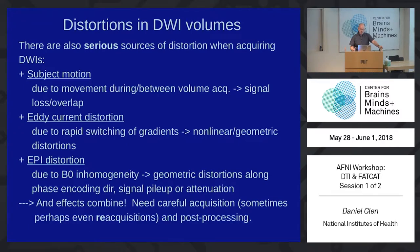DWI has a lot of distortions. The image by itself looks distorted, but we can also have the regular things we see in fMRI: subject motion, eddy current distortions from the switching of the gradients, and EPI distortion — the same kind of thing we saw with fMRI data that we solve with blip-up/blip-down. We can do the same kinds of things here. So we need a processing method that takes into account all these different problems.